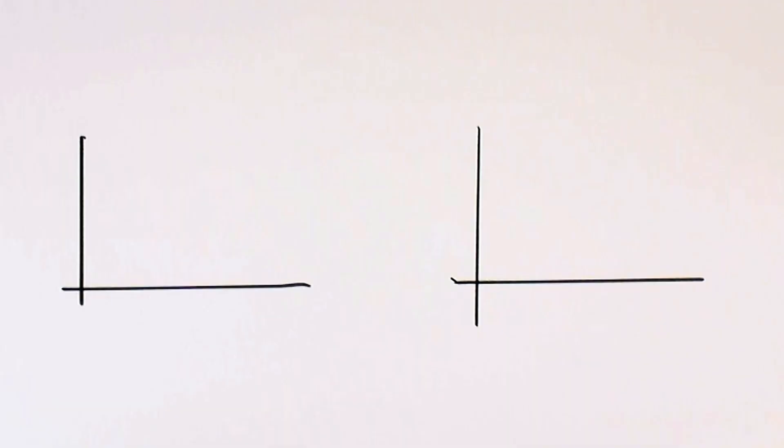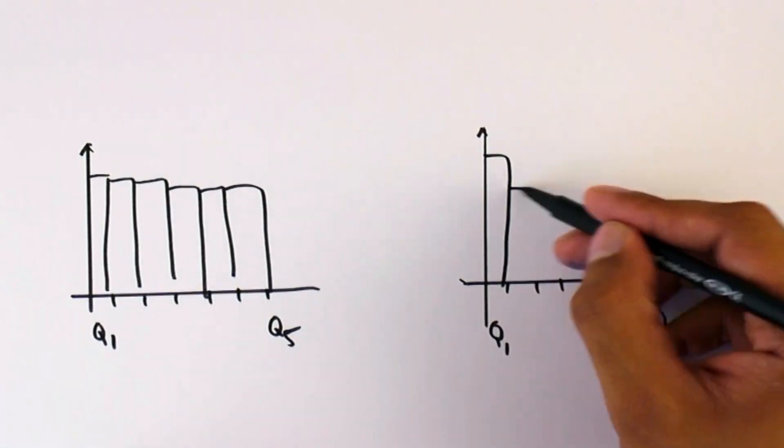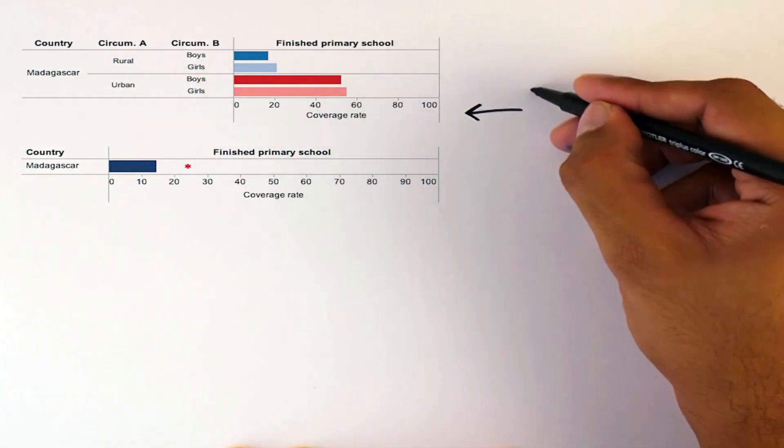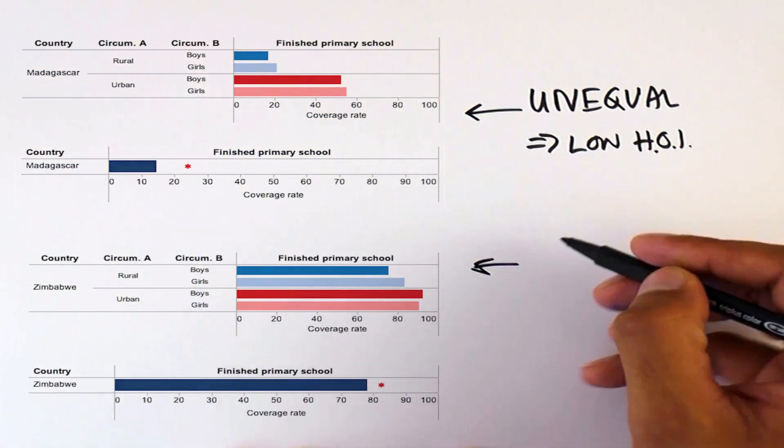For each country, the index measures the availability of key basic services and how fairly they are distributed among the population. If a country's services aren't equally accessible for different groups of its population, they'd score lower on the index than a country with services available to all.